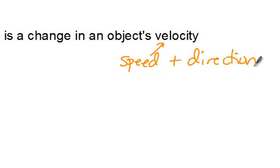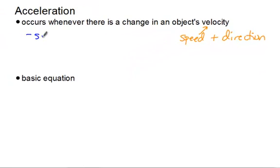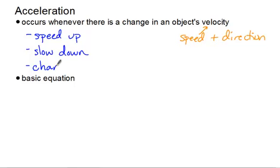So whenever either one of those change — the speed or the direction — there is going to be an acceleration. Think about the three things that could possibly happen for acceleration to occur: first, an object could speed up; secondly, it could slow down; and the third is for an object to change direction — turn left to right, up or down. Those three things are the three different ways an object can accelerate.